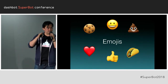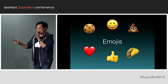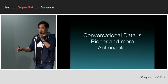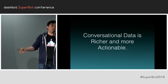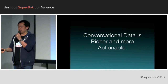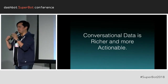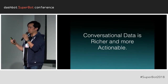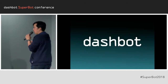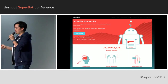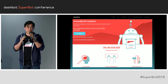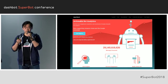Emojis — if any of you are millennials — they have a lot of meaning. What we learned is that conversational data, as we started ingesting a lot of it, is actually rich. We found it more rich and more actionable than the event-based data from our web and mobile days. And that's why we built DashBot — to help you analyze what's happening in these conversations between your users and your apps and skills.